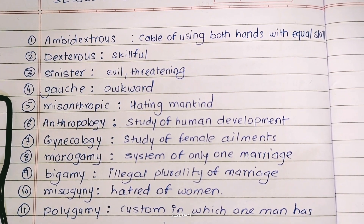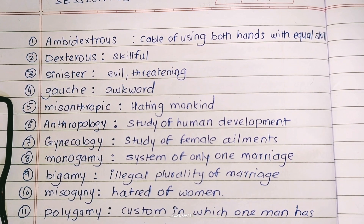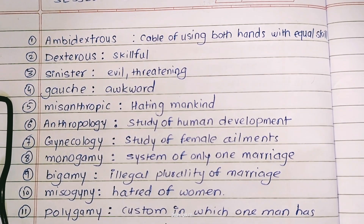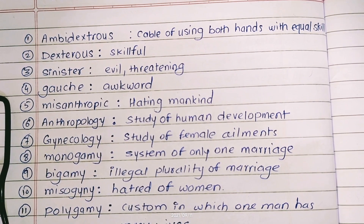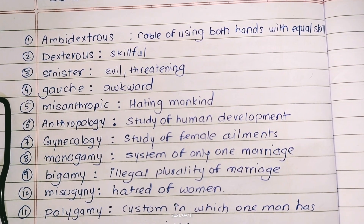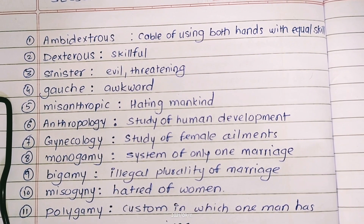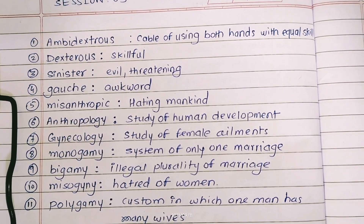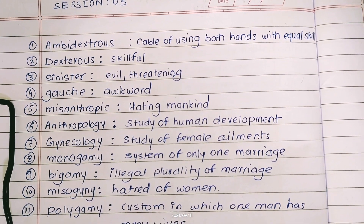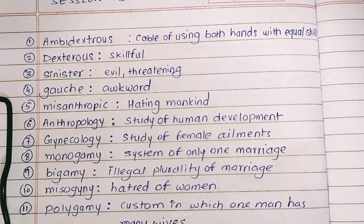My next word is misanthropic. You already know miso- means to hate, anthropos means mankind, and the suffix -ic makes it an adjective. So misanthropic means hating mankind.